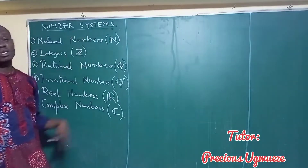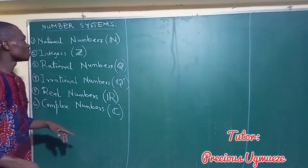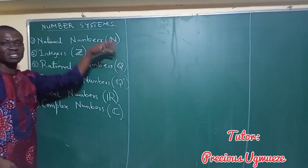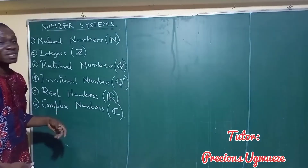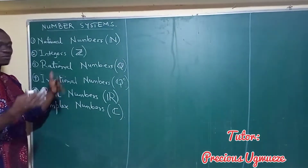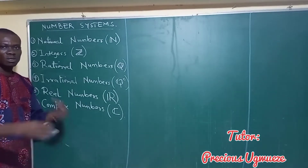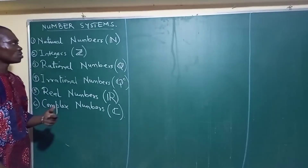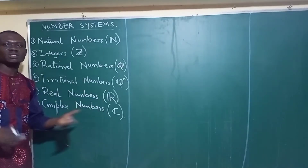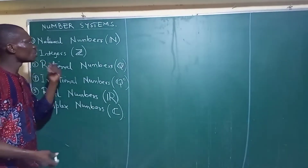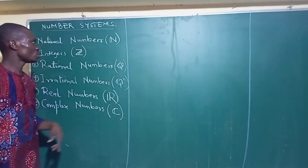In this video, we are going to be looking at number systems — the concept of number systems and what it is all about. Number systems refers to the different types of numbers that we have and make use of in every mathematics. When you're doing mathematics, you're using a lot of numbers in addition, subtraction, and all of that. So what are these different types of numbers that we make use of?